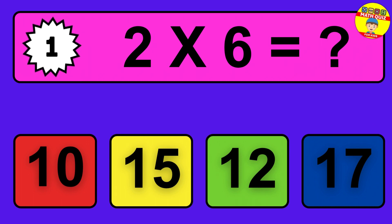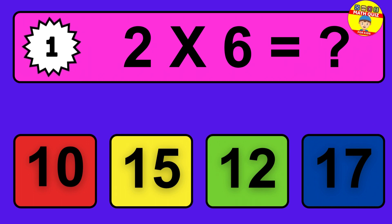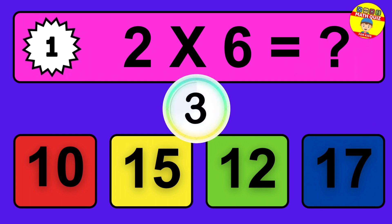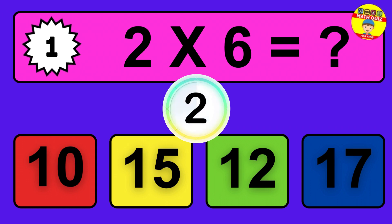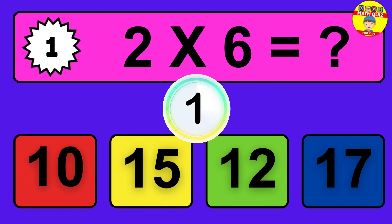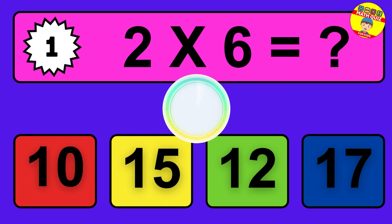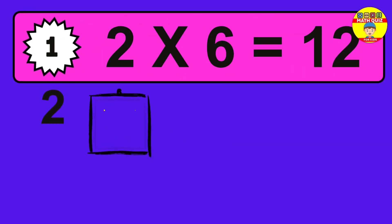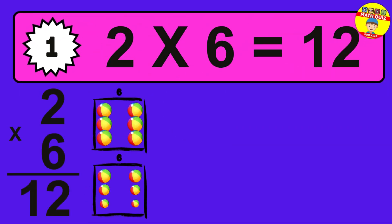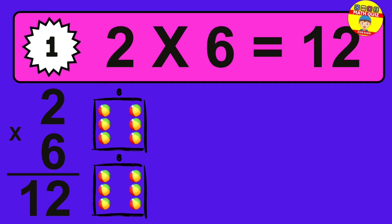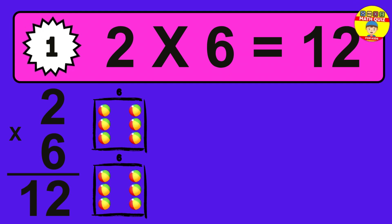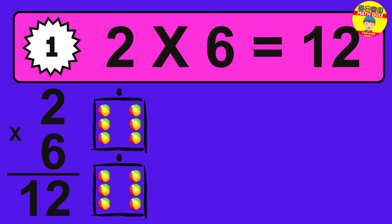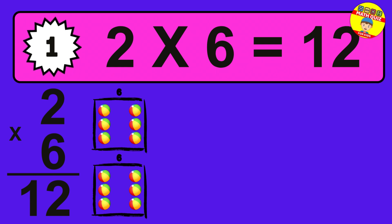Question 1. 2 times 6 equals what? The answer is 2 times 6 is 12. To calculate, we have 2 groups with 6 balls each one. So how many balls do we have? 12 balls.